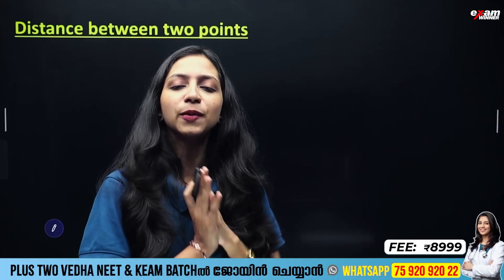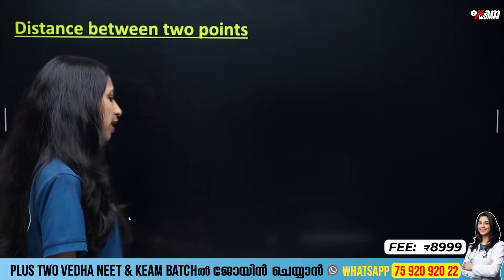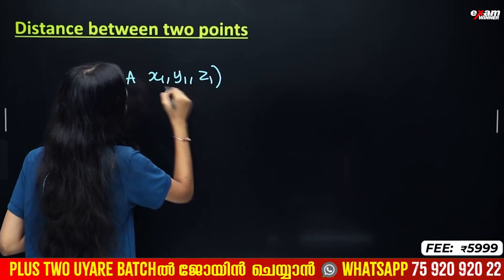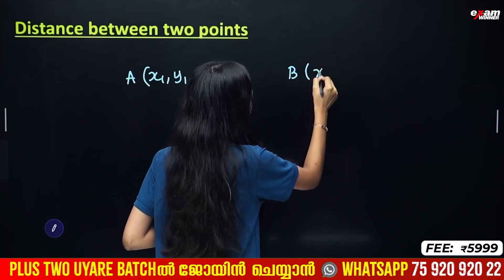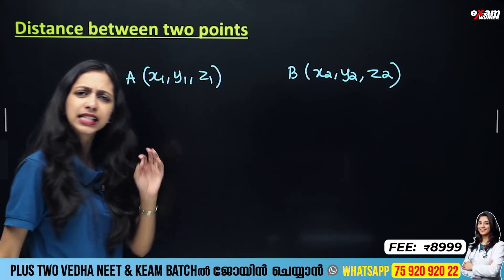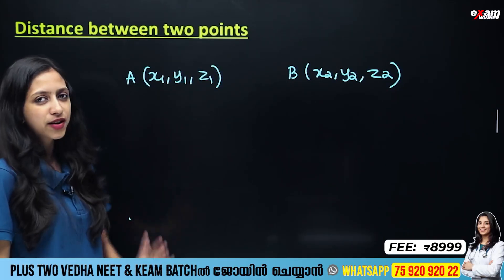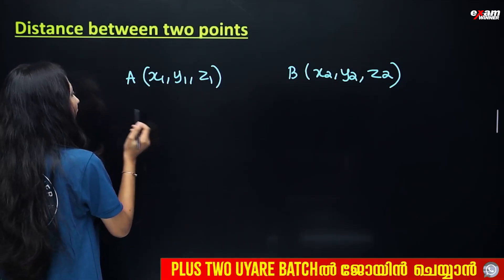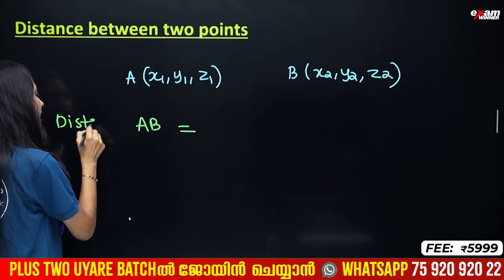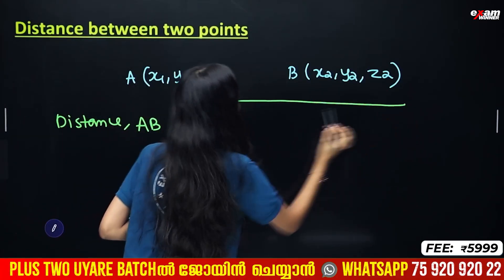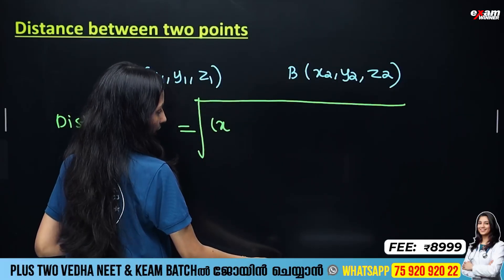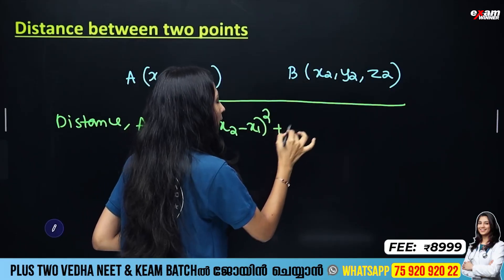Now we have the distance formula. Given two points — A with coordinates (x1, y1, z1) and B with coordinates (x2, y2, z2) — the distance between A and B is the square root of (x2 minus x1) squared plus (y2 minus y1) squared plus (z2 minus z1) squared.